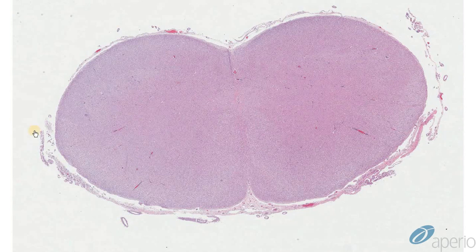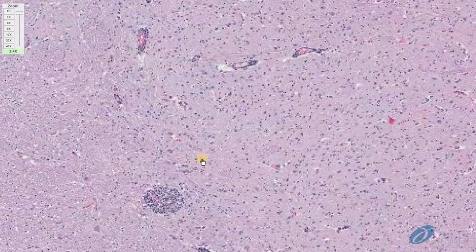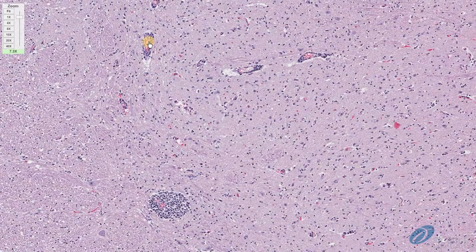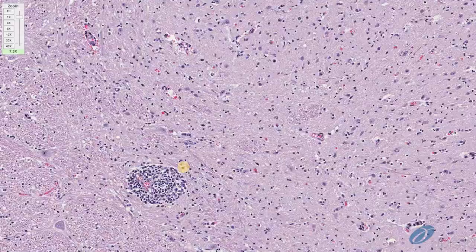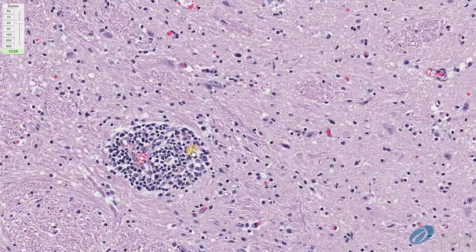This is a case from a cow, and this is a cross-section of the medulla oblongata. Under low magnification, we can already appreciate some areas showing basophilia, which indicates there are cellular aggregates in these regions. At high magnification, we can see that the clear spaces around blood vessels — referred to as Virchow-Robin spaces — contain several layers of mononuclear cells composed of lymphocytes, plasma cells, and macrophages. This is called a perivascular cuff.